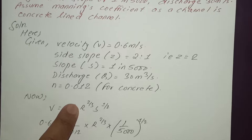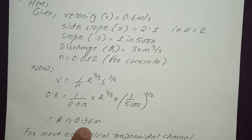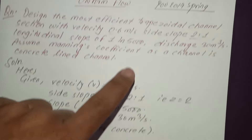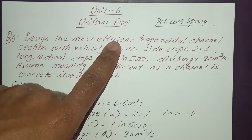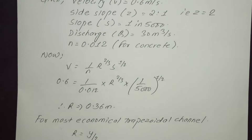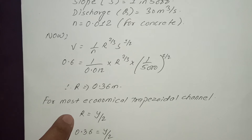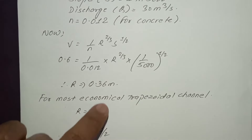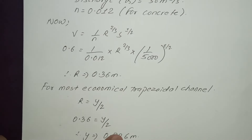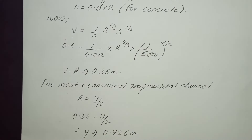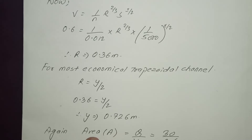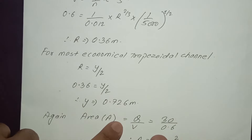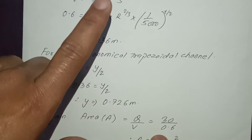Velocity V is equal to... Here the side slope Z is equal to the given value. Now, the area is calculated as follows — the area expression involves the depth y.